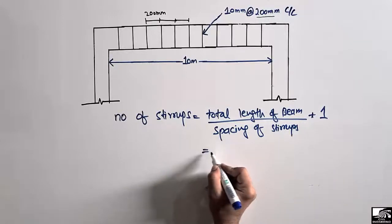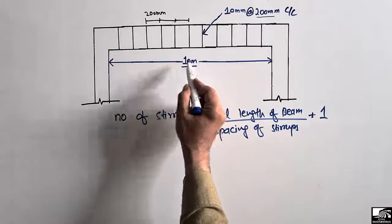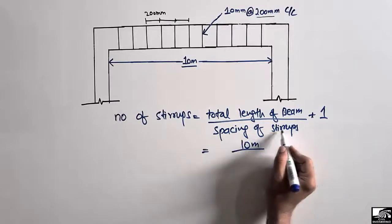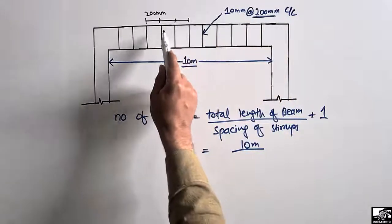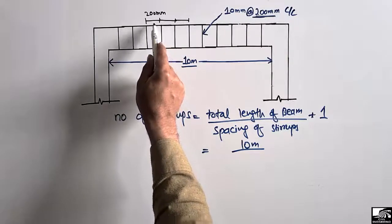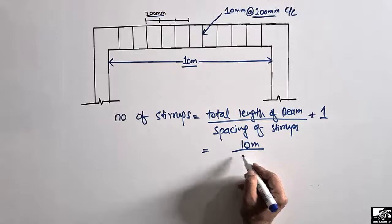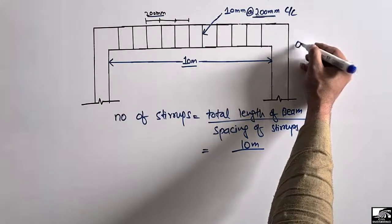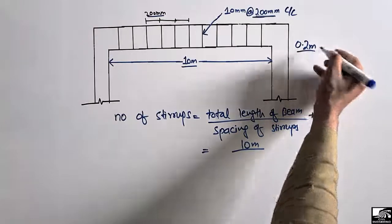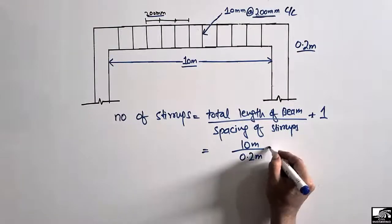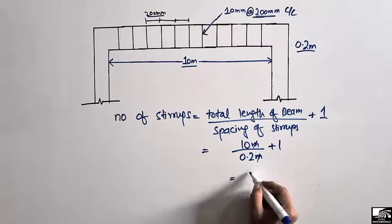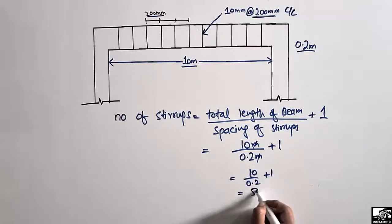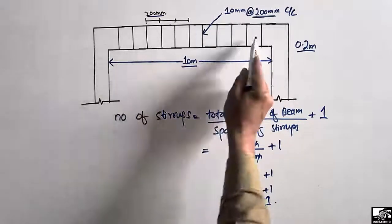The total length of the beam is 10 meters. We divide by the spacing of the stirrups, which is 200 mm center to center. Converting 200 mm to meters gives 0.2 m. So the formula becomes: 10 divided by 0.2, plus 1. That gives us 50 plus 1, which equals 51. So 51 stirrups are used in this beam.